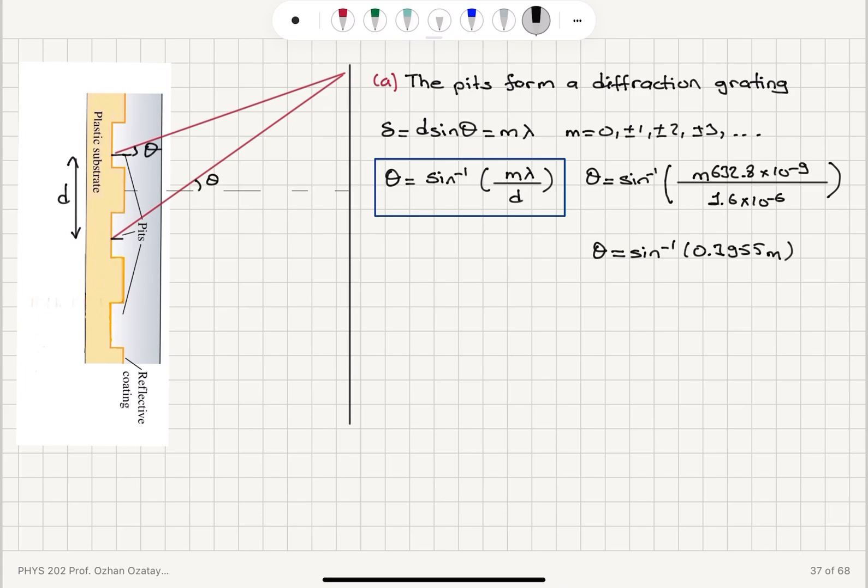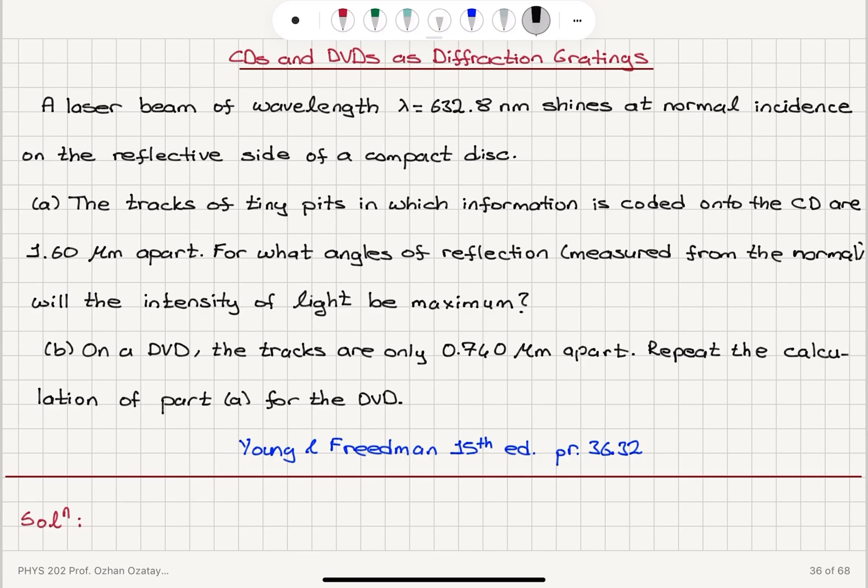So when we have M is equal to 0, theta 0 is 0 degrees. That's where we have the central maximum. So we're looking for angles measured from the normal.